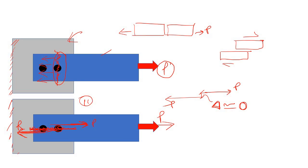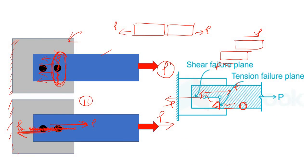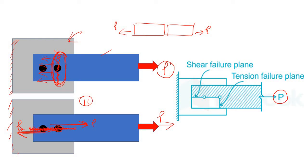So initially this was under the action of tensile force and this is under the action of shear force. Now if you combine these two actions simultaneously — both tensile action as well as shear action — that combined action on this connection is known as block shear. In block shear, this particular plane is under the action of tension and this plane is under the action of shear.